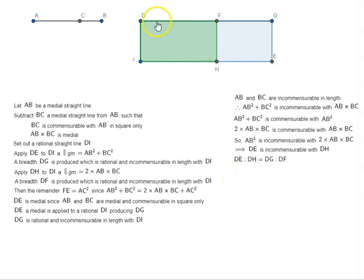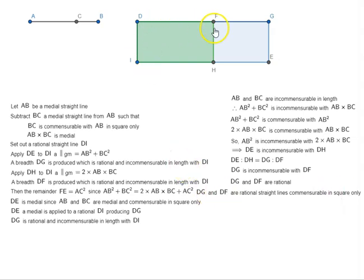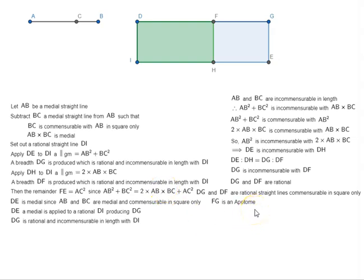We know DE is to DH as DG is to DF, since figures between the same parallel lines are proportional to their bases. Therefore DG is incommensurable with DF, because DE is incommensurable with DH. DG and DF are both rational, so DG and DF are rational straight lines commensurable in square only. Therefore FG — that is, DG minus DF — is an apotome, by Proposition 73.